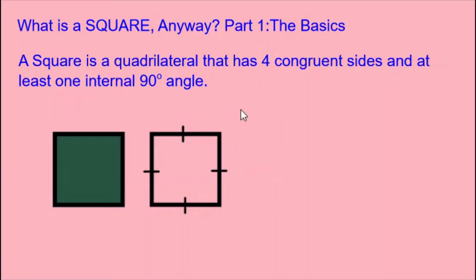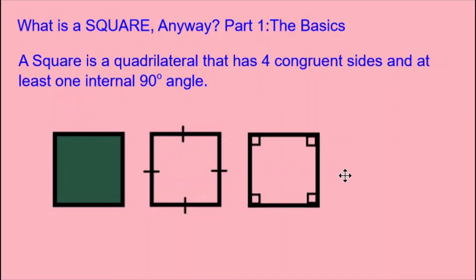And at least one internal 90-degree angle. That's interesting, because most of us realize that a square actually has four internal 90-degree angles. So why does the definition only talk about at least one? This is because if you try to draw a quadrilateral with four equal sides and make sure to draw two of those sides at a 90-degree angle, the other three angles will be forced to become 90 degrees. So the definition doesn't have to mention all four — mentioning one is enough, along with four congruent sides, to make a square have all four internal 90-degree angles.